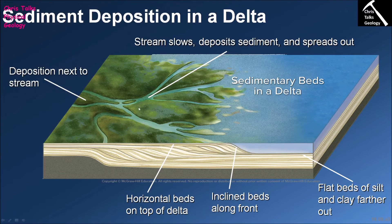As more material is deposited along the front edge of the delta it continues building outward into the body of water. Over time the inclined beds keep building out, rolling over the top of the clay deposits, and then horizontal beds are deposited over the top of the inclined beds. This produces a sequence with clay-rich sediments at the bottom, followed by silt-rich sediments, and finally sandy sediments at the top.